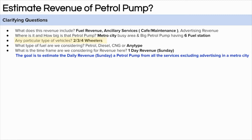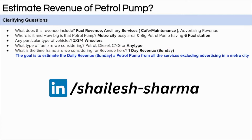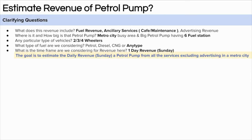The third question is about the type of vehicle included — let's assume any type except heavy vehicles like trucks and buses. The fourth question is about fuel type (CNG, petrol, diesel) — let's assume no constraint. Finally, the timeframe: let's assume we are estimating the daily average revenue on weekends. The goal of the problem is to estimate the daily revenue of a petrol pump in a busy area, considering all types of revenue excluding advertising.